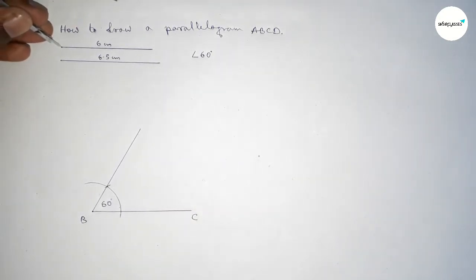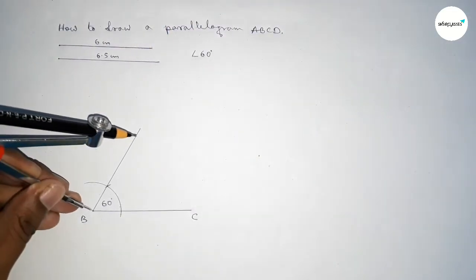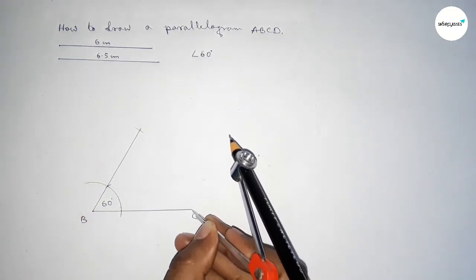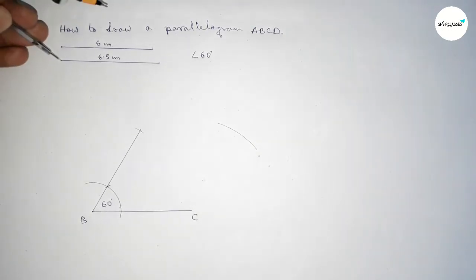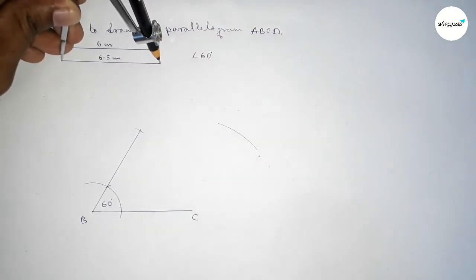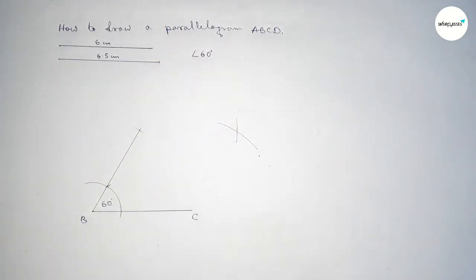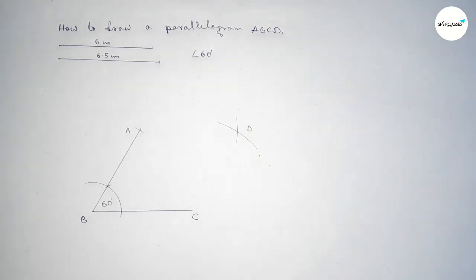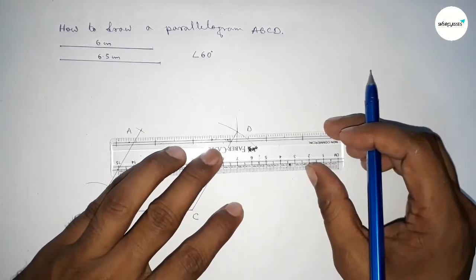Now taking the length 6 centimeters using the compass and putting the compass here to cut an arc with the same length. Then taking the length 6.5 centimeters using the compass and putting the compass here to cut another arc, so both curves intersect at a point. Taking point A here and point D here.